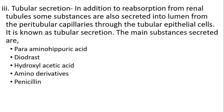Tubular secretion: in addition to reabsorption from the renal tubules, some substances are secreted into the lumen from the peritubular capillaries through the tubular epithelial cells — this is known as tubular secretion. The main substances secreted are para-aminohippuric acid, diodrast, hydroxyl-acetic acid, amino derivatives, and penicillin.